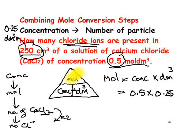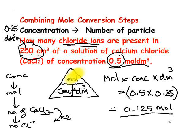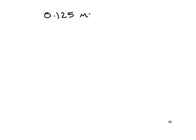Moles equals concentration times cubic decimetres. The concentration given is 0.5, and the volume of 250 cubic centimetres is 0.25 cubic decimetres. So moles equals 0.5 times 0.25, which comes out to be 0.125 mol of calcium chloride.